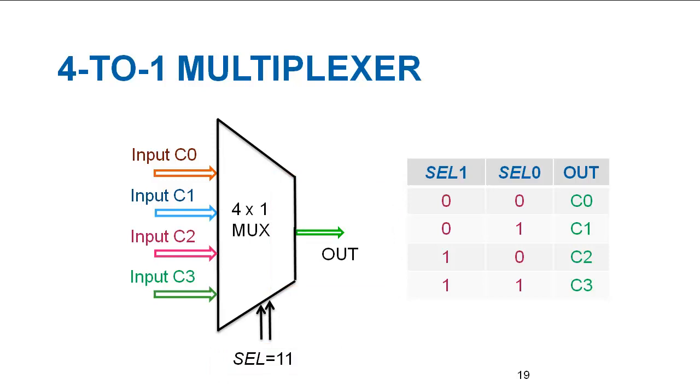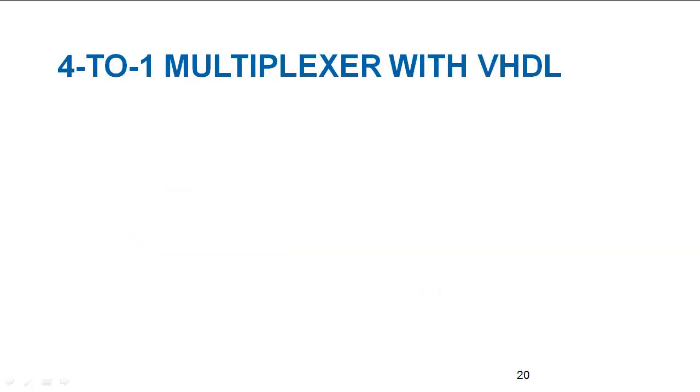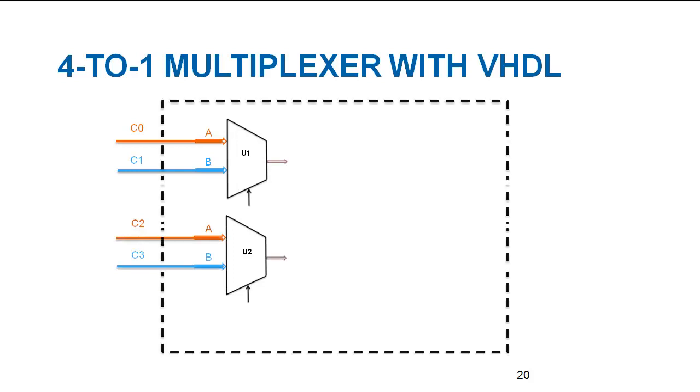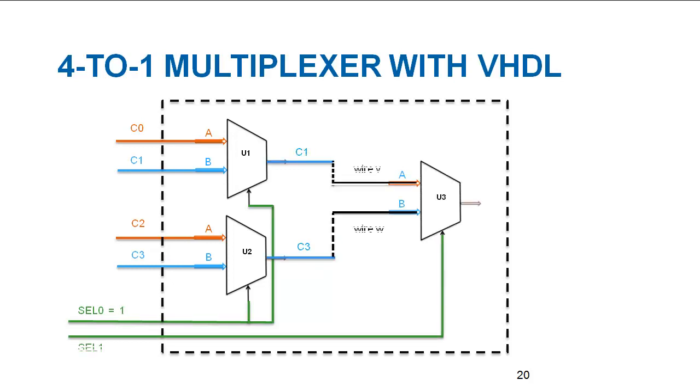It can be constructed using three two input multiplexers in the arrangement shown here. MUX U1 selects between input channels C0 and C1, and MUX U2 selects between C2 and C3. The selection on U1 and U2 are made on the basis of value S0. If S0 is low, C0 and C2 will be selected on their respective units, otherwise C1 and C3 will be selected. The selected pair will be forwarded to another unit U3 that will make a final selection based on S1 value.